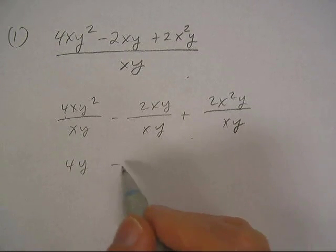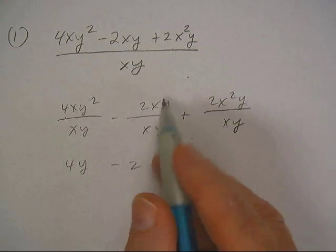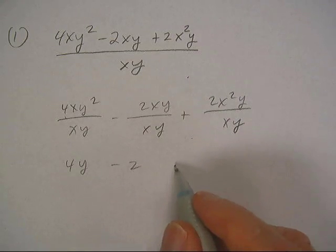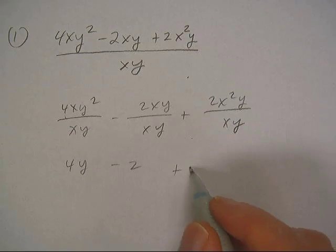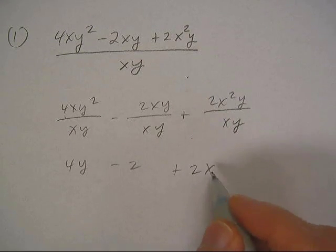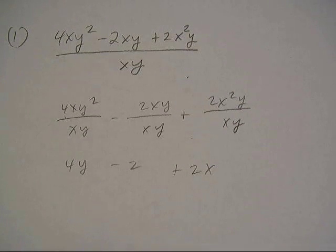The x's and y's divide: this is going to be 4y, this is going to be negative 2, and this one is going to be 2 — the y's cancel and you get an x. So the answer is 4y minus 2 plus 2x. We're done on that one.